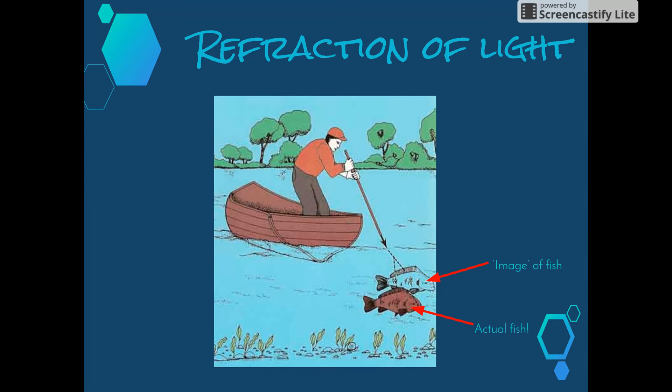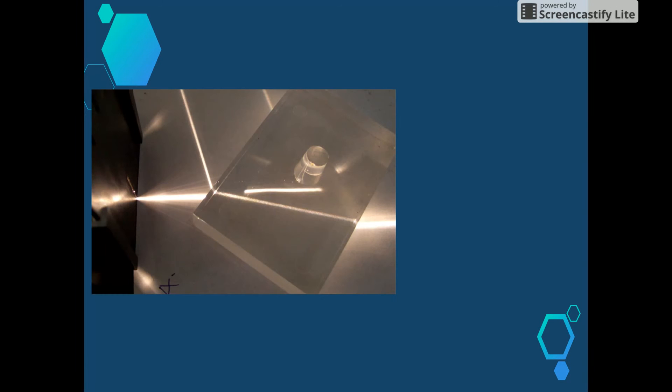When light moves from one substance or medium such as water to another medium such as air, it is bent or refracted. This leads to a distortion of the image that you see, making it difficult to judge the exact location of the object which you are looking at. When light passes from one medium to another with a different density, the speed of which the light is travelling changes. As a result of the light speeding up or slowing down, the rays are bent or refracted.